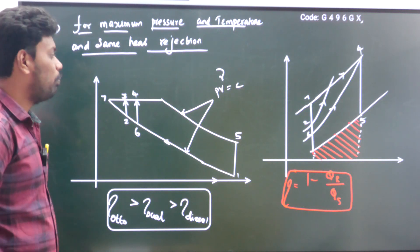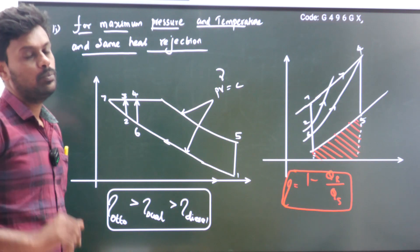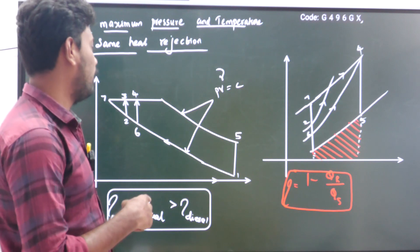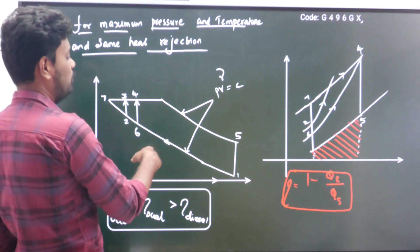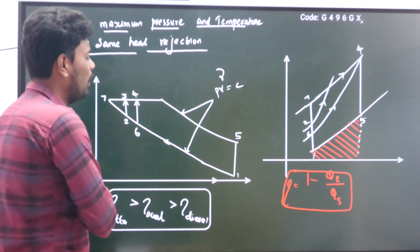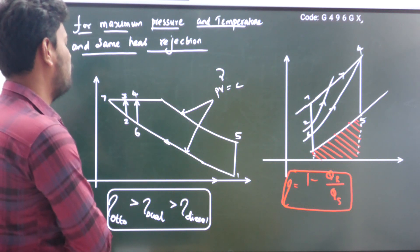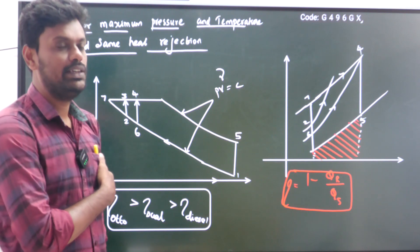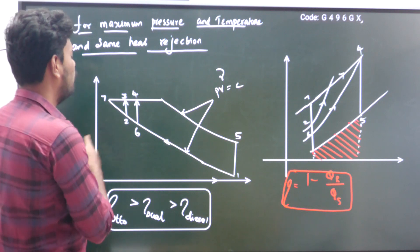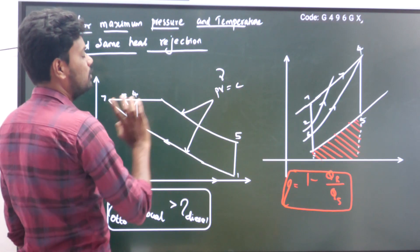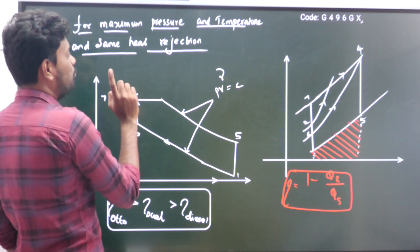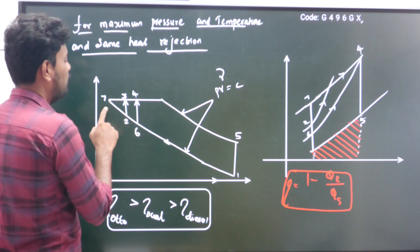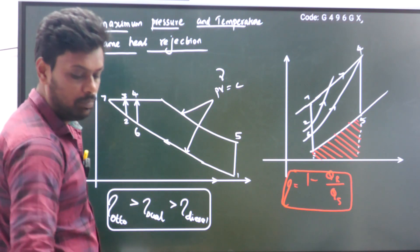In the last class, we saw how to plot the PV diagram and TS diagram. Here also I have plotted based on maximum pressure and temperature. If you look at the PV and TS diagrams carefully, you can see that all three cycles are included. The condition is that maximum pressure and temperature should be common to all cycles.